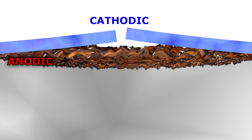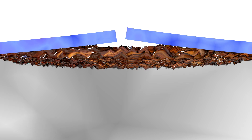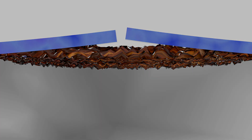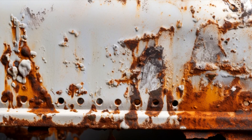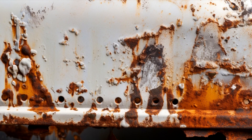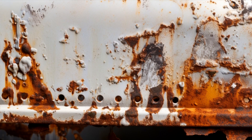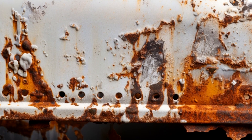Filiform corrosion is electrochemical in nature, where the area at the head of the worm becomes anodic and the region at the tail cathodic. The head contains more metal ions and less oxygen and chloride ions than the tail. This creates a potential difference that promotes corrosion at the anode and increases the rate of corrosion, ultimately causing the delamination of the coating.